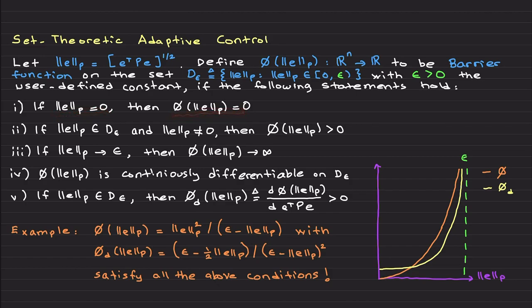First of all, when error in P norm of the error is zero, then this phi function is zero. If this P norm of the error belongs to the set and is not equal to zero, then we have a positive definite phi. If we approach to the boundary of the set, this phi approaches infinity. This needs to be continuously differentiable on this D_e set.